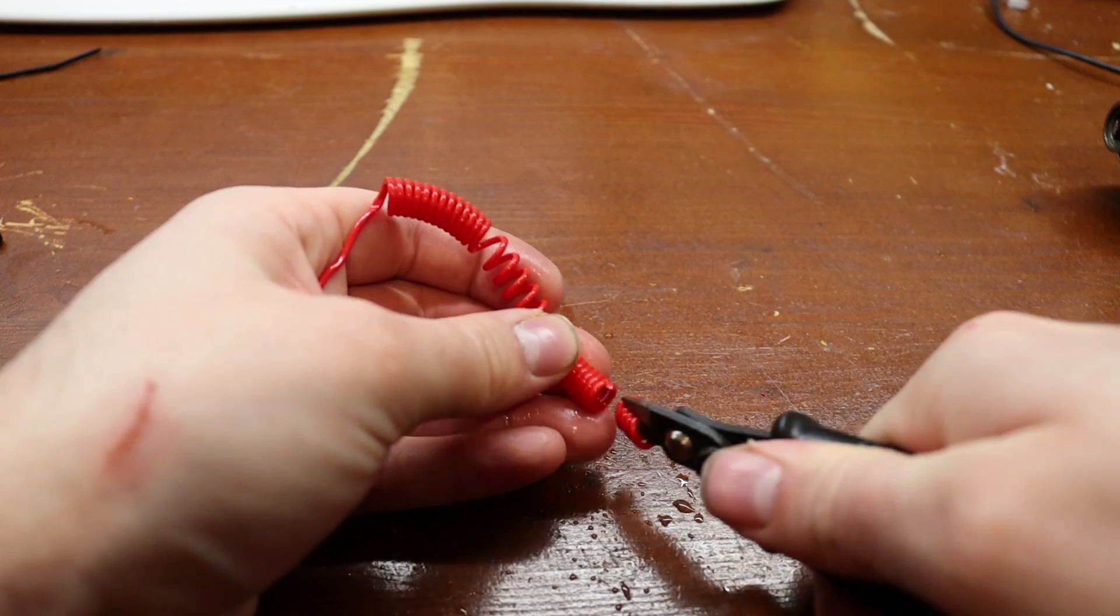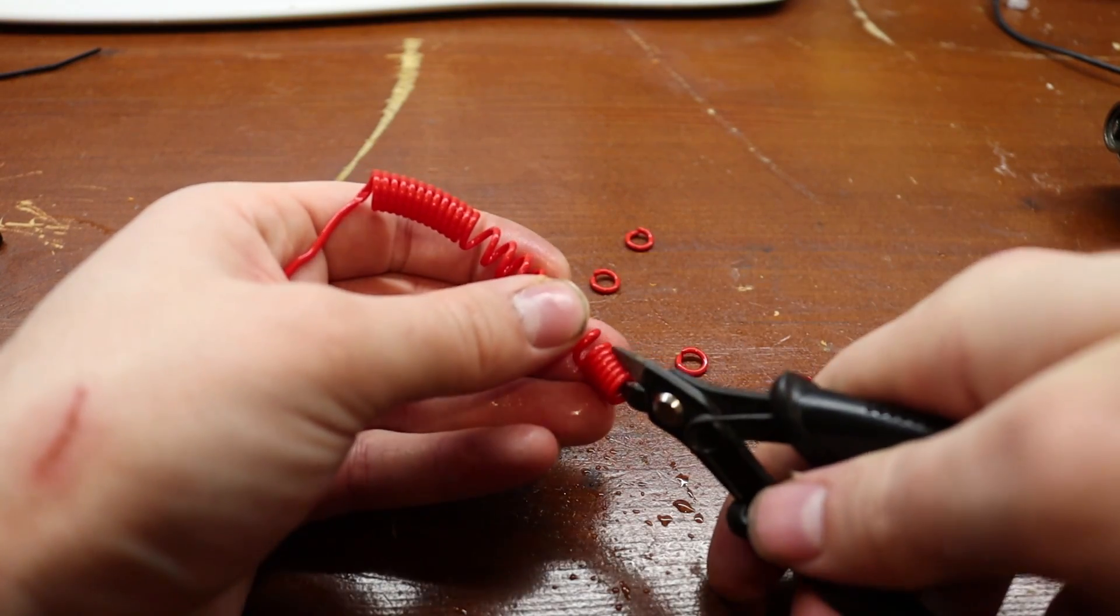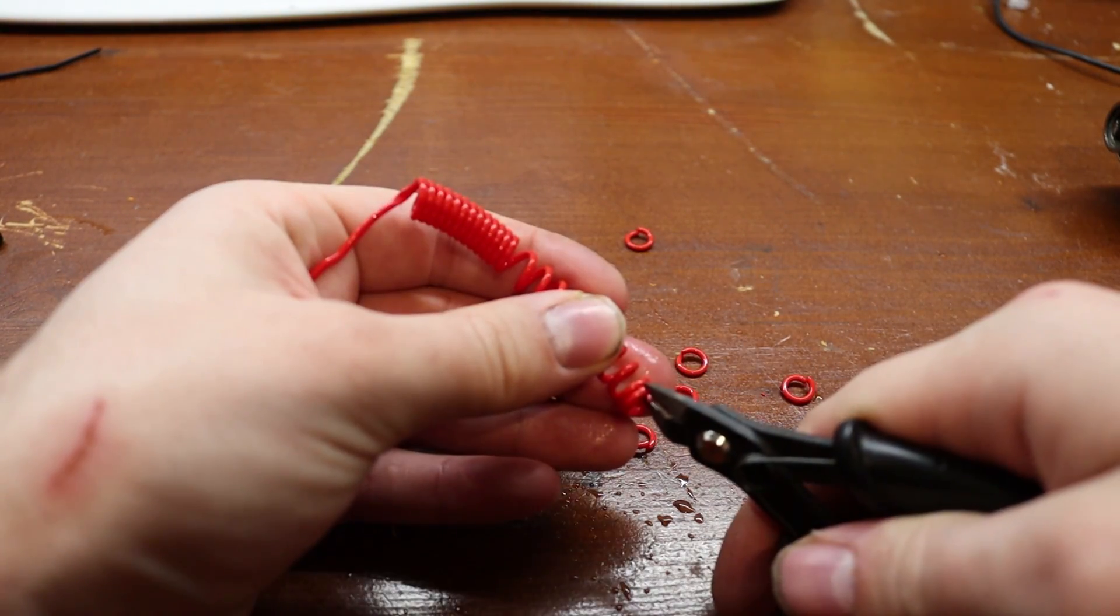After you have removed the tape and the zip ties, you can start by trimming the excess material and basically cutting the spring into its final shape.